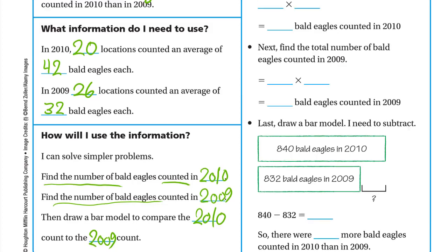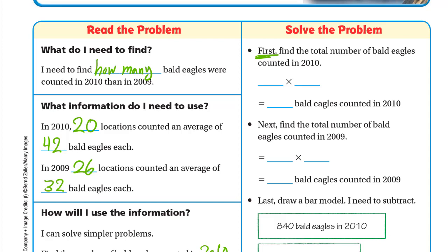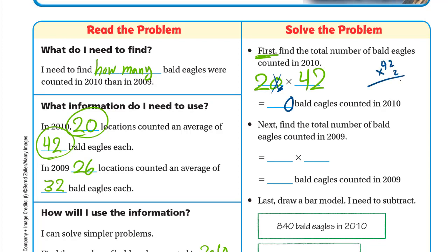Let's solve the problem. First, find the total bald eagles in 2010: multiply 20 by 42. Since we're multiplying by 20, we write a 0 in the ones place and just multiply 2 times 42. So 2 times 2 is 4, 2 times 4 is 8 — that gives 84. With the 0, the answer is 840 bald eagles counted in 2010.